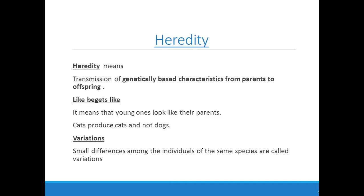Now let's take a look at the different terms we come across while studying genetics. Heredity means transmission of genetically based characteristics from parents to offspring — like begets like. It means that young ones look like their parents. We know that cats produce cats and not dogs, and humans produce children, not any other animal — meaning the same type of species has to be originated.